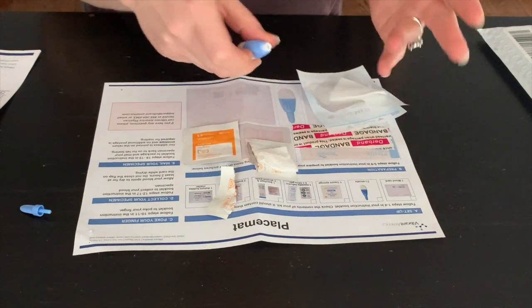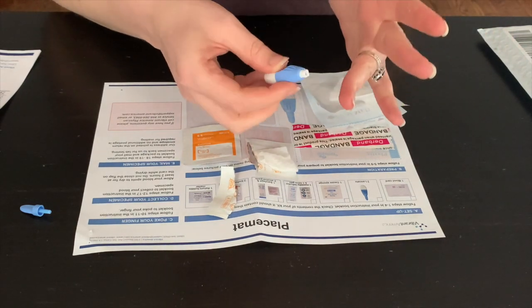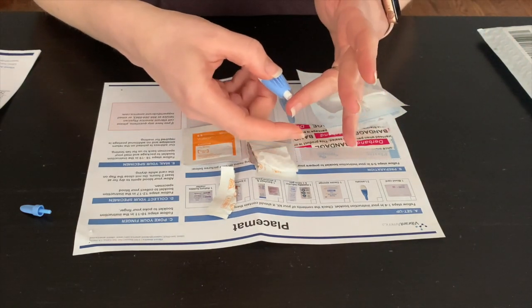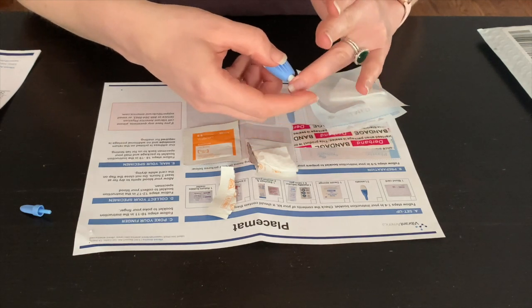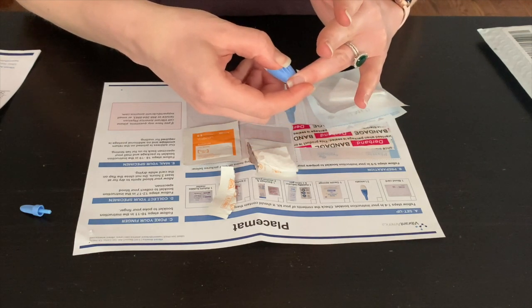With your palm facing up, press the lancet to your finger until you hear a click sound and feel a slight pinch. You should see a drop of blood begin to appear.